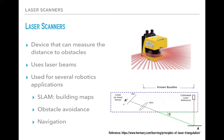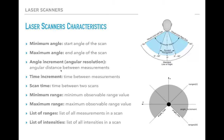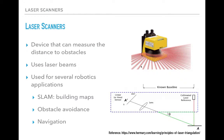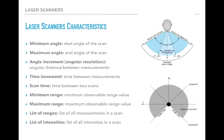The laser sends several laser beams from the minimum angle to the maximum angle. As you can see, we have separate beams, and there is an angle difference between one beam and another. This angle difference is called the angle increment, and it represents the angular resolution of the laser range finder.